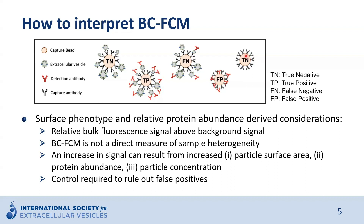Importantly, dependent on beads, reagents, or antibodies used, there can be false positive beads or events if detection antibodies bind directly to the capture beads unspecifically. What is quantified is the bulk fluorescent signal above background signal. While providing useful information about phenotype and protein abundance, this method is not a direct measure of sample heterogeneity, and in that sense can be biased towards specific phenotypes in certain cases. Specifically, an increase in specific signal can practically result from either increased EV surface area, or higher protein abundance per EV, or higher concentration of EVs positive for the respective phenotype in the sample.